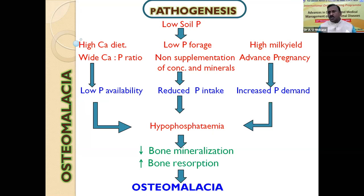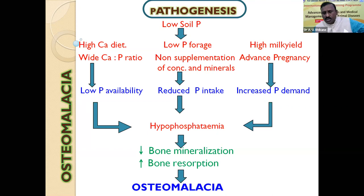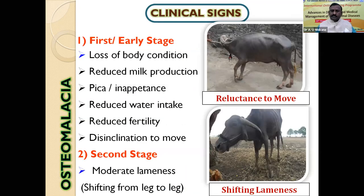The fat content is also higher in buffalo milk, so the requirement is higher. Hypophosphatemia resulting from all these factors leads to demineralization of bone in order to maintain the phosphorus level in the bloodstream. Continuous demineralization leads to weakening and resorption of the bone. That is manifested as osteomalacia. We have categorized for the first time the stages of osteomalacia.